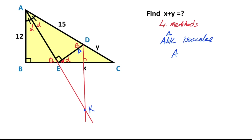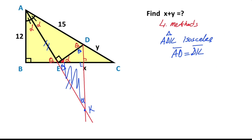That means triangle ADK is an isosceles triangle, so the length of AD must equal the length of DK. Therefore these two parts must be equal to each other. If here is theta, this angle is also theta. Notice that here is 90 degrees and here is also alpha. This triangle and this triangle have the same angles and opposite of 90 degrees have the same length, so these two triangles are congruent.